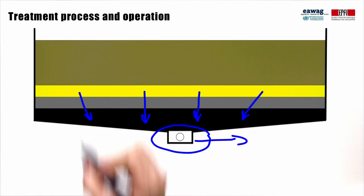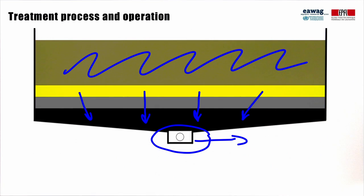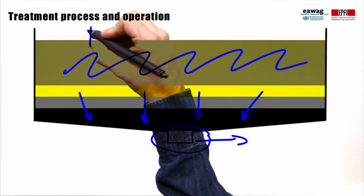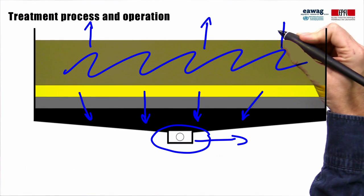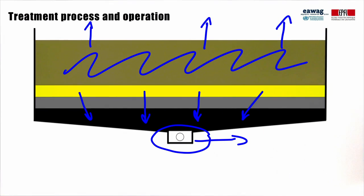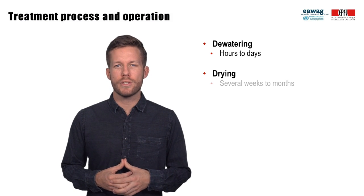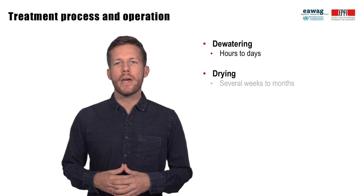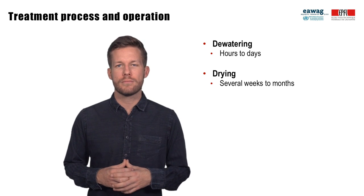The sludge accumulates on top of the sand filter layer. Following dewatering, during drying, liquids and solids are further separated by evaporation. Dewatering usually takes several hours to days, whereas the duration of drying is usually longer and takes several weeks to months.